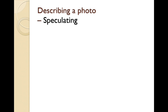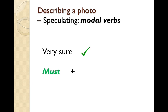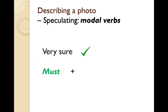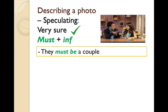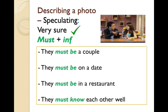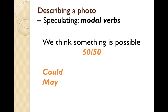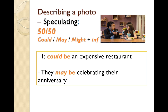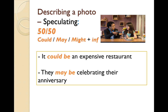We can also speculate about what might be happening or what the situation might be, using modal verbs. If we're very sure that something is true, we use 'must' plus the infinitive: they must be a couple; they must be on a date; they must be in a restaurant; they must know each other very well. If we think something is possible — 50/50 — we use 'could,' 'may,' or 'might' plus the infinitive: it could be an expensive restaurant; they may be celebrating their anniversary; it might be their first date.